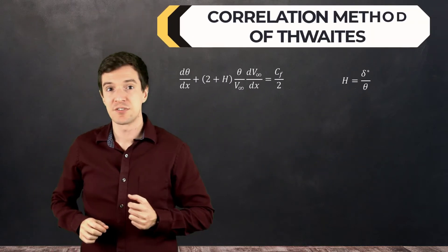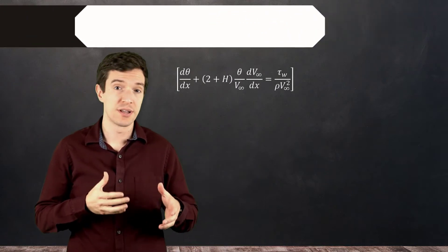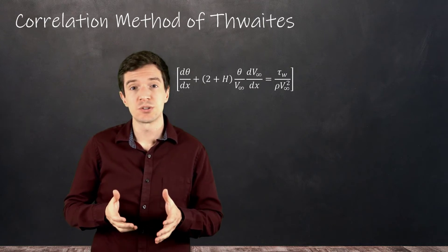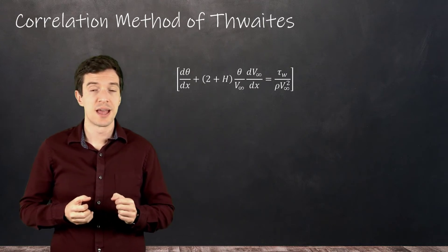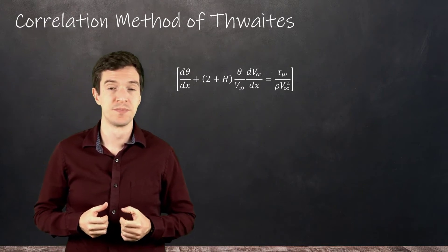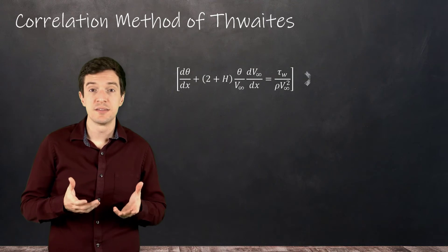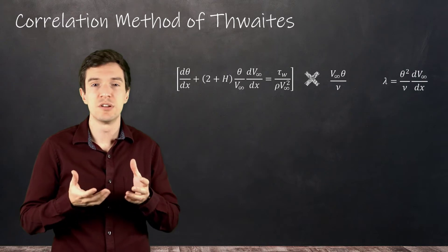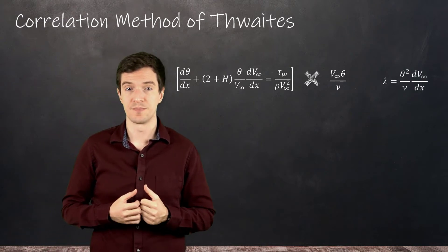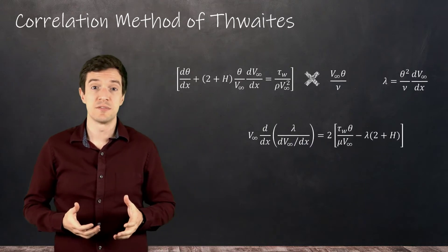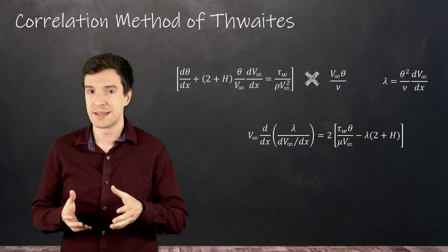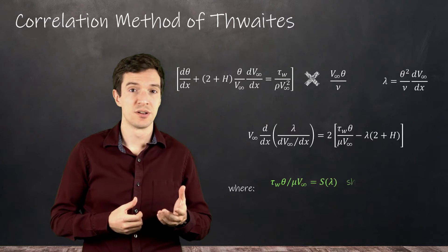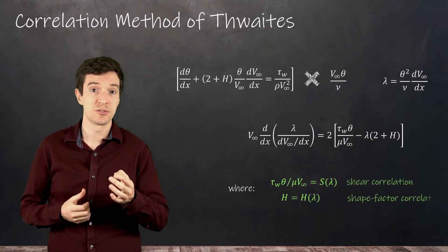Starting from this equation, we can introduce the correlation method of Thwaites to develop a solution based on correlations that works for non-zero pressure gradients and up to the separation point. The idea is to multiply the Kármán relation by a factor and define a correlation parameter lambda to develop a new form of the equation. We can see that the equation can be written in a form where we can identify some correlation functions: one is the shear correlation and one is the shape factor correlation.